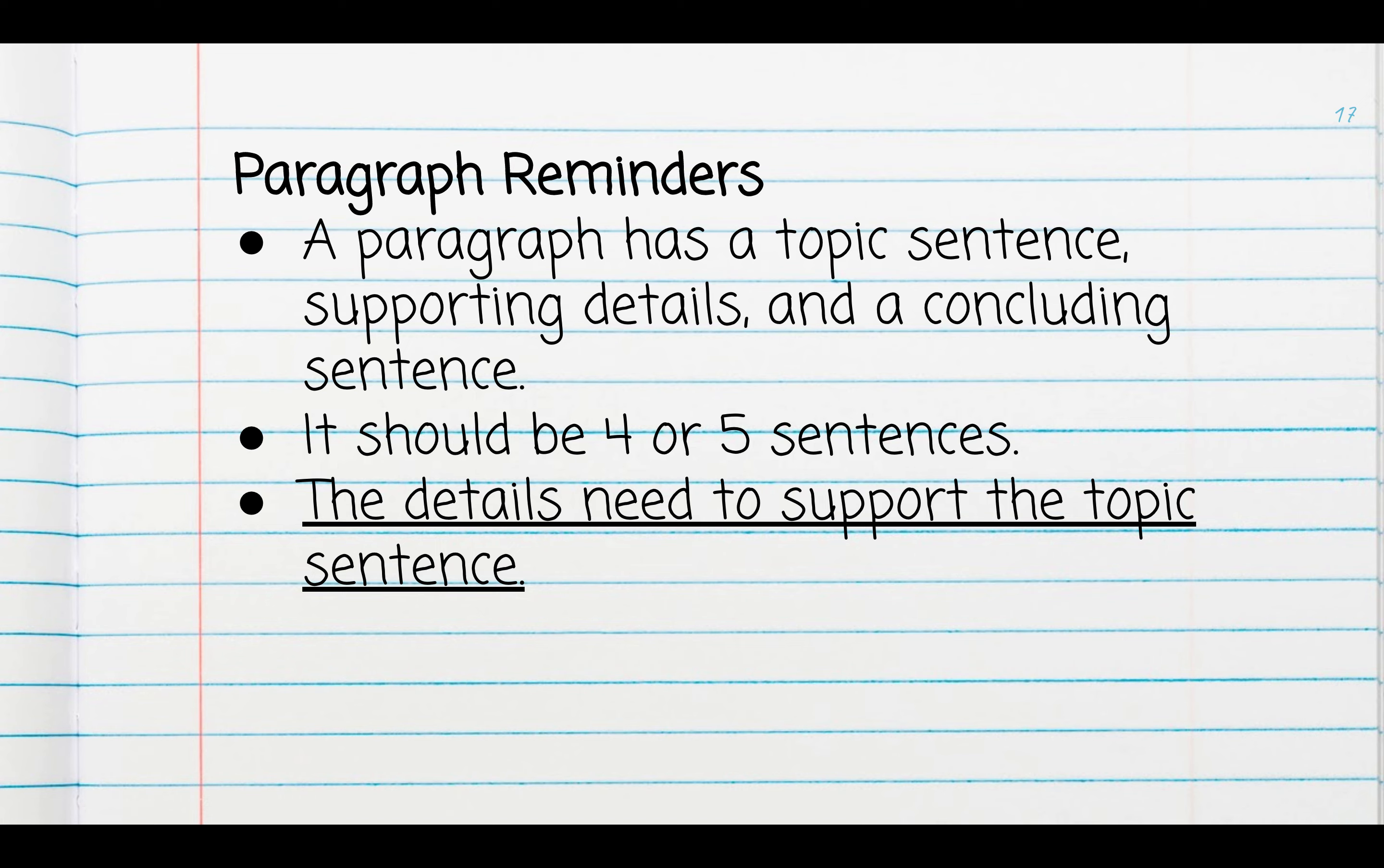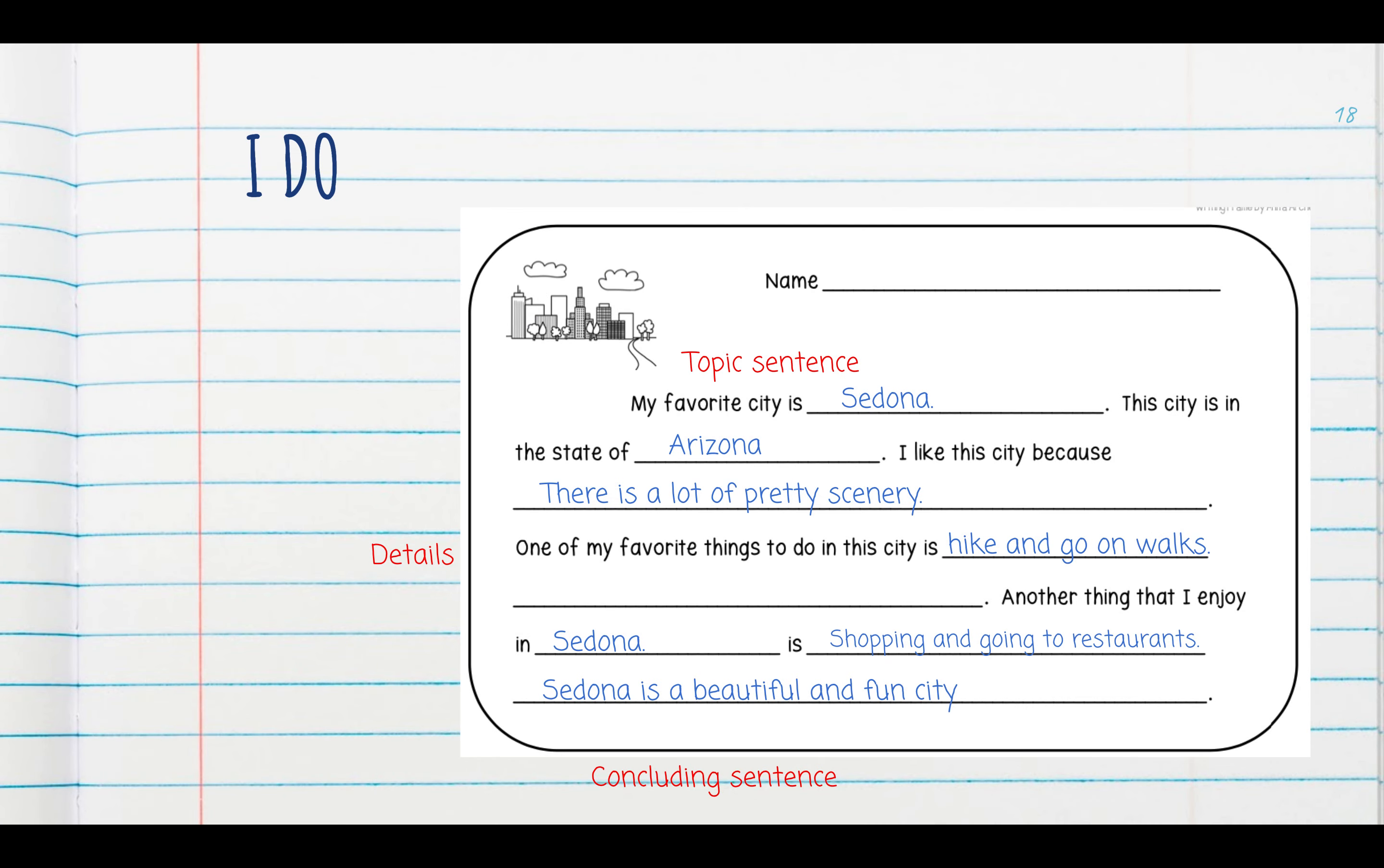Our supporting sentences need to support the topic sentence. Remember, we want our paragraph to be on topic. That means it needs to all be about the same thing. So this organizer here is going to help me organize my thoughts, and I'm just going to fill in the blanks here. My favorite city is blank, and I wrote Sedona. So that right there is my topic sentence. It's introducing that my entire paragraph is about my favorite city.